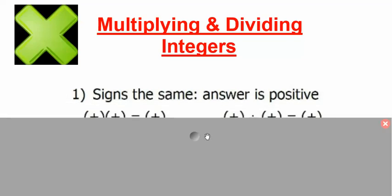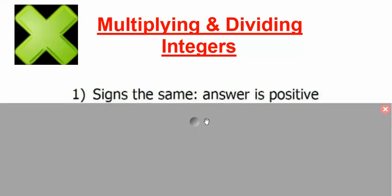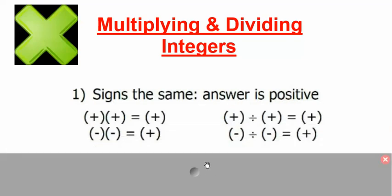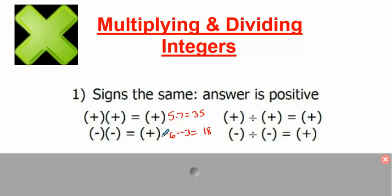Here are the easy rules. If you have the same sign, your answer will always be positive, whether we're dealing with multiplying or dividing. Same sign, your answer will always be positive. For example, if I have 5 times 7, obviously that's going to be positive 35. But if you have negative 6 times negative 3, you multiply the numbers — that's 18 — but your answer will always be positive. When you multiply two negatives, it gives you a positive.